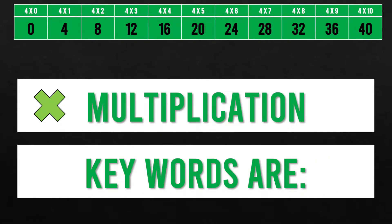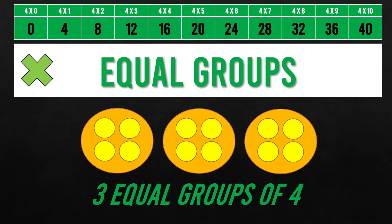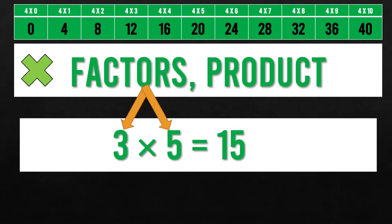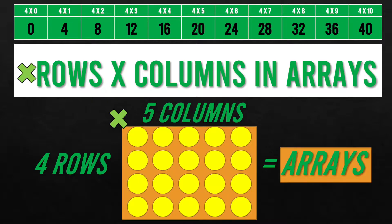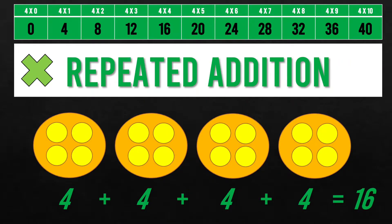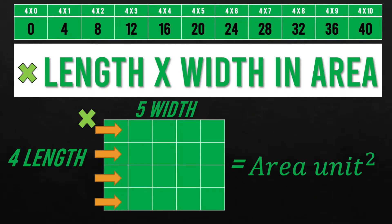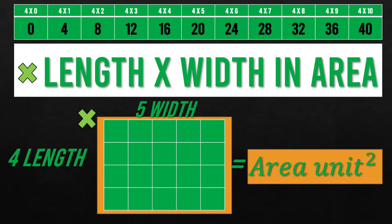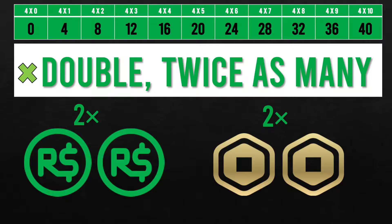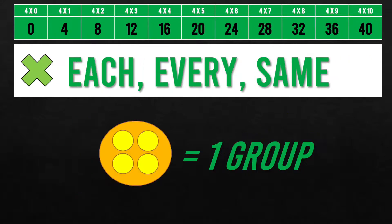Multiplication keywords are: equal groups, times, factors, products, rows, and columns in arrays. Repeated addition, length and width in area, double, twice as many, each, every, same.